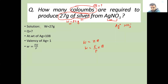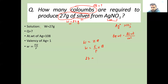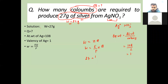So W equals E over F into Q, where 96500 is Faraday's constant. The equivalent weight formula is atomic weight divided by valency. So equivalent weight of Ag = 108 divided by 1 = 108, into Q with 96500.